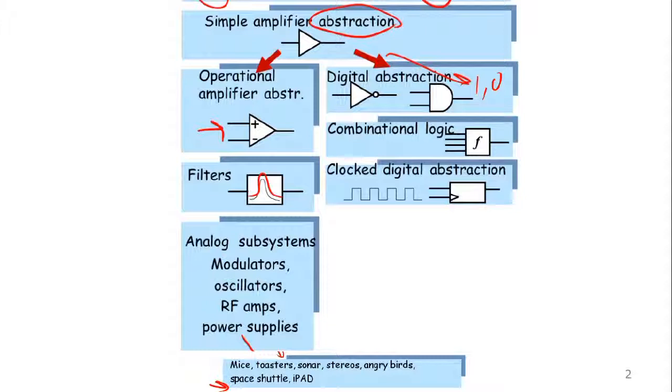And abstractly, these clocked digital systems will be used to build even more complicated and useful systems, such as microprocessors. So, for example, there, the abstraction we make is called the instruction set abstraction, or ISA. And the instruction set abstraction will allow us to build an even more complicated class of systems that are characterized by their instruction sets. So we can have the MIPS instruction set, we can have the Pentium instruction set, and so on and so forth.